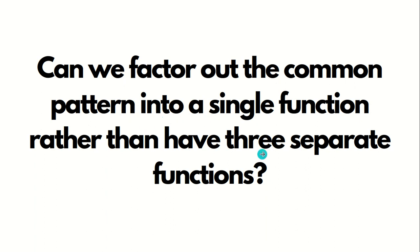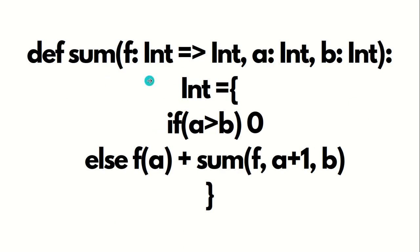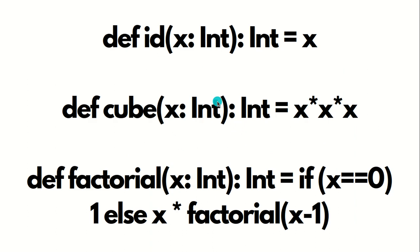Can we factor out this common pattern into a single function rather than three separate ones? Yes — using higher order functions. We define 'sum' as a higher order recursive function taking three parameters: the first is a function itself, and the second and third are two integers a and b. The function passed as a parameter performs some operation on the integers, and its result is summed to get the final output.